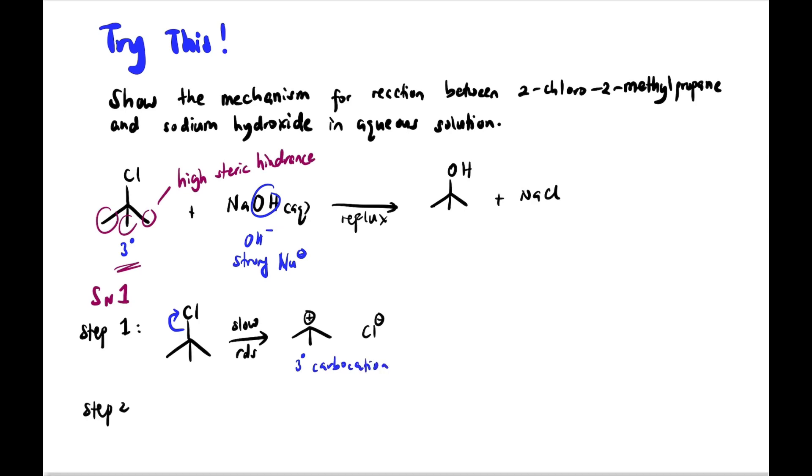After that, enter step 2: carbocation attack by nucleophile, which is OH minus nucleophile. Because it's strong, it will only attack once. Directly get the product. This is fast step. It's not a weak nucleophile. Weak nucleophile earlier, for example, needs to attack twice to settle. This is strong nucleophile. Attack once, enough. Directly get final product.